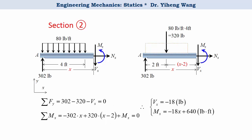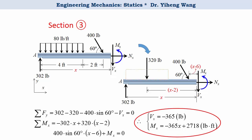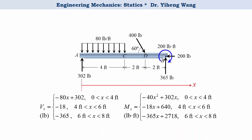We do the same for section 2, still using the entire left segment of length x, and being careful when finding the moment arm for the concentrated force. This gives two more functions applying to the second part of the member. Repeating once more for section 3 — again the segment has length x — we solve the last set of functions for the third part. Summarizing the results, both the shear force and bending moment are piecewise functions, each made up of three different equations applying to different parts of the member.